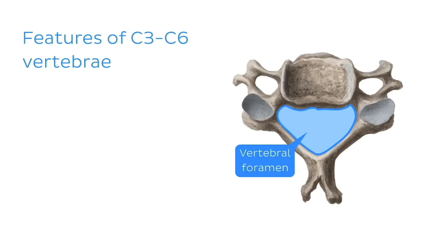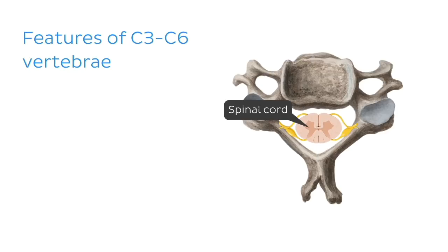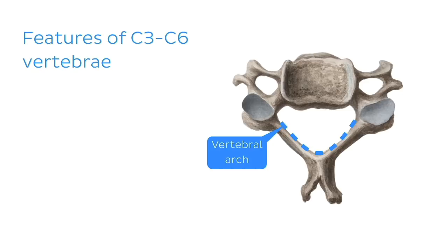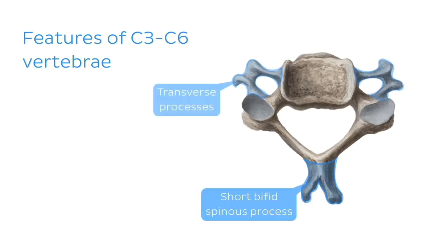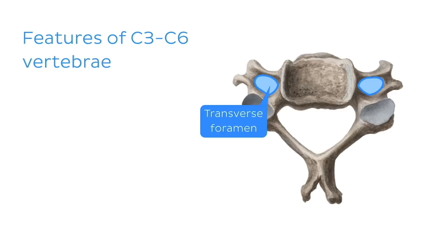The posterior aspect helping to form the vertebral foramen is the vertebral arch. Protruding off the arch is the short spinous process, which is bifurcated in shape. Laterally, we have the transverse processes, and within each of these we have a transverse foramen. The transverse foramina are specific to cervical vertebrae and allow for passage of the vertebral artery. The pieces of bone here are the pedicles, and the parts seen posteriorly between the transverse processes and the spinous process are the laminae.